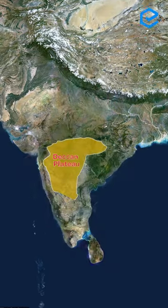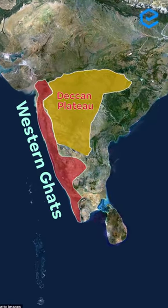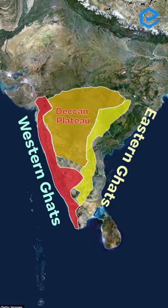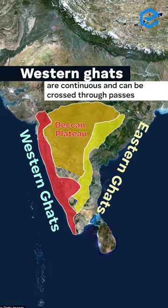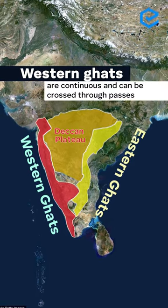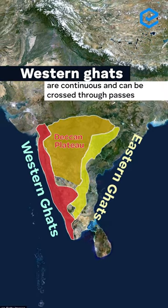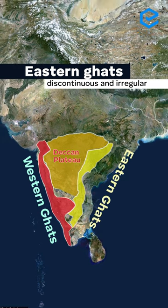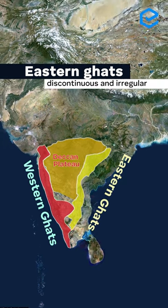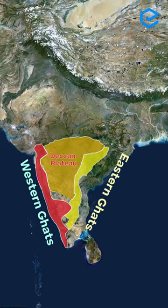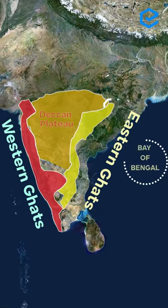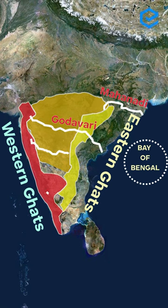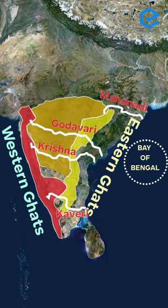On the western edge there are Western Ghats and on the eastern edge there are Eastern Ghats. The Western Ghats are continuous and can only be crossed through passes. The Eastern Ghats are discontinuous and irregular because they are dissected by the rivers draining into the Bay of Bengal — Mahanadi, Godavari, Krishna, and Kaveri.